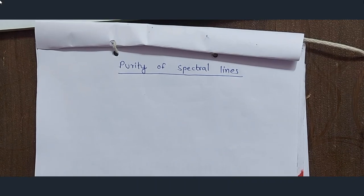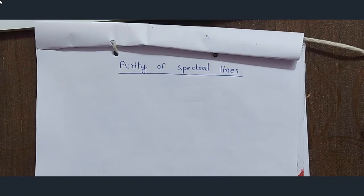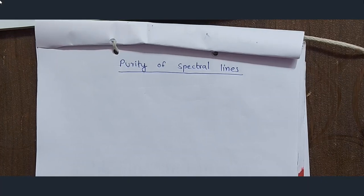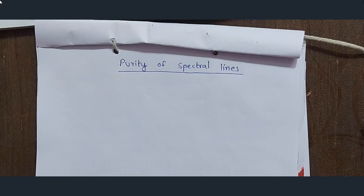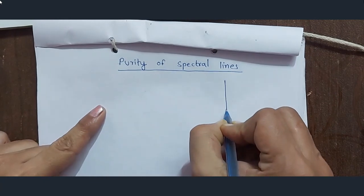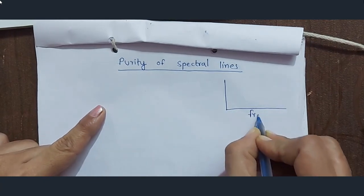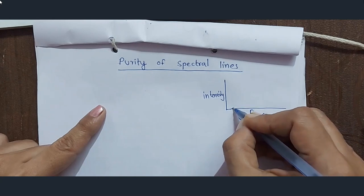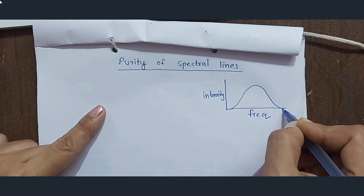Hello students, today we are going to see purity of spectral lines. One more important factor that determines the quality of the laser is purity of spectral lines. When a spectral line is emitted by ordinary light, it is not sharp; rather it is spread over a wide range — a wide frequency range.